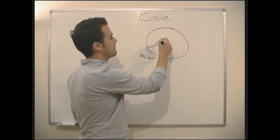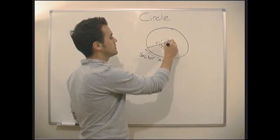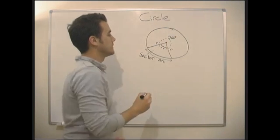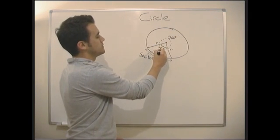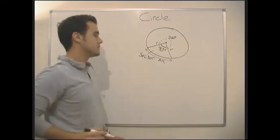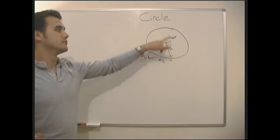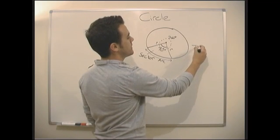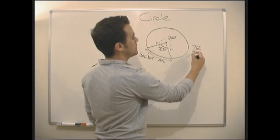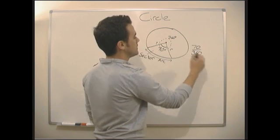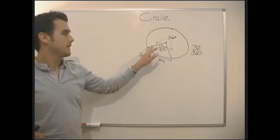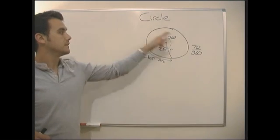Don't forget the total angle inside a circle all the way around is 360 degrees. So let's say this angle was 70 degrees. This is a fraction of the whole. It's going to be 70 over 360 of the entire circle. That's what fraction this sector is going to be of the entire circle.